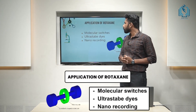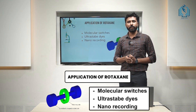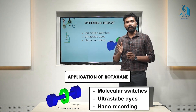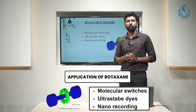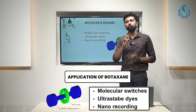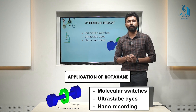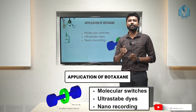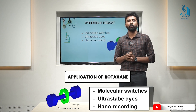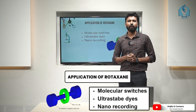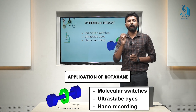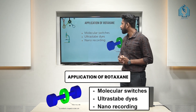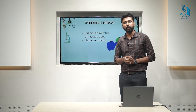Now, we could discuss the applications of rotaxane. Considering the structure of rotaxane, we have a linear molecule encapsulated by a macrocyclic ring. In that molecule, we could see two movements: the translational movement of the macrocyclic ring, and the rotational movement of the macrocyclic ring with respect to the linear molecule. These two movements help us to use this molecule as molecular machines or molecular switches. Apart from that, it can be used as ultra-stable dyes and also for nano recording.